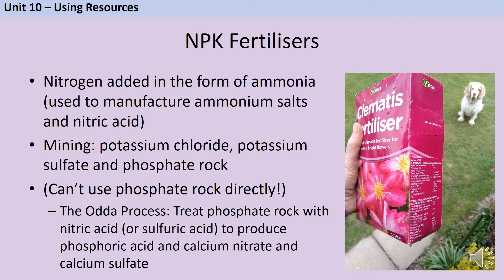Potassium chloride and potassium sulphate can be used directly in fertilisers, but phosphate rock can't because it's a rock. Instead we have to use a process called the Odour process. You take phosphate rock and treat it with either nitric acid or, less commonly, sulphuric acid. Because phosphate rock tends to contain quite a lot of calcium phosphate, this reaction makes phosphoric acid — and also calcium nitrate if you've used nitric acid, or calcium sulphate if you use sulphuric acid. It's the phosphoric acid that we want, as that's what's added to the fertiliser as a source of phosphorus.